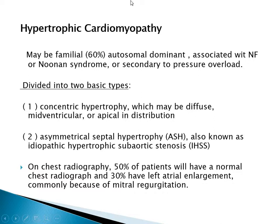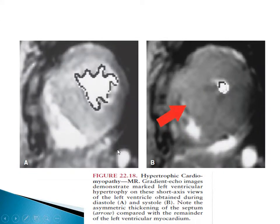Hypertrophic cardiomyopathy may be familial in 60% of cases with autosomal dominant inheritance, or associated with neurofibromatosis or Noonan syndrome, or secondary to pressure overload such as systemic hypertension. It is divided into two basic types: concentric hypertrophy, which may be diffuse, concentric, mid-ventricular, or apical in distribution; and asymmetrical septal hypertrophy, also known as idiopathic hypertrophic subaortic stenosis. On chest radiography, 50% of patients have a normal chest radiograph and 30% have left atrial enlargement, commonly due to mitral regurgitation. This MRI shows the septum markedly thickened during diastole and systole compared to the ventricular wall.